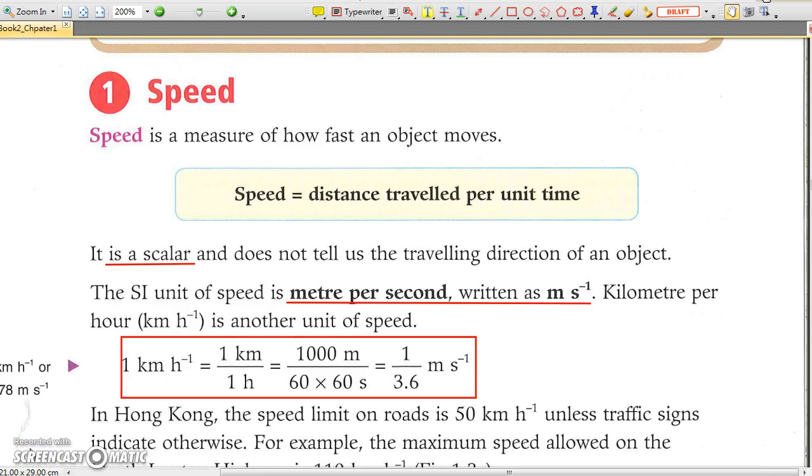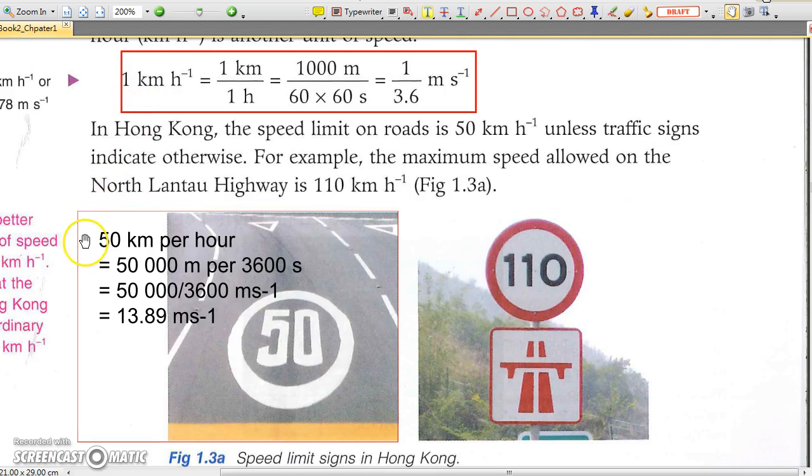Cars are running fast. The speed of a car is usually measured in kilometer per hour. For 50 kilometer per hour, the car runs 50,000 meter per 3600 seconds. And in this way, you can see the speed is 13.89 meter per second.